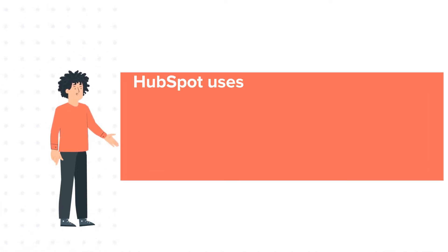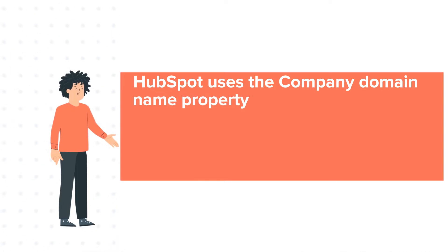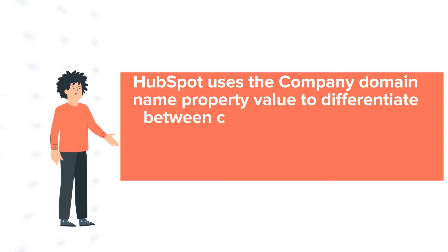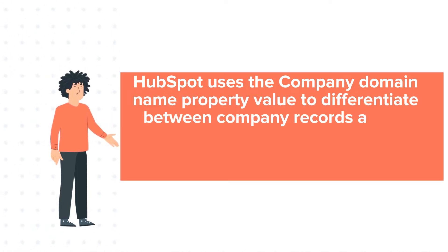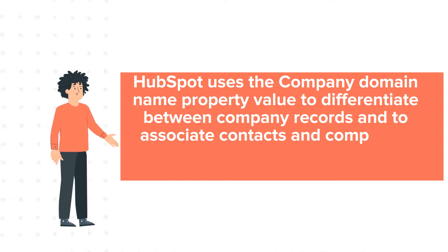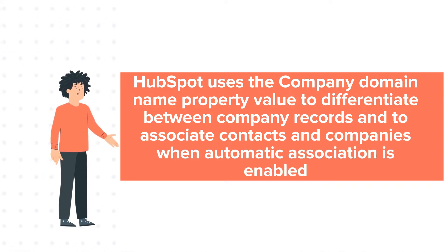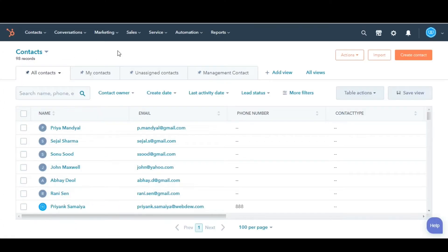HubSpot uses the company domain name property value to differentiate between company records and to associate contacts and companies when automatic association is enabled. Let us see how you can add additional domain names to a company record.